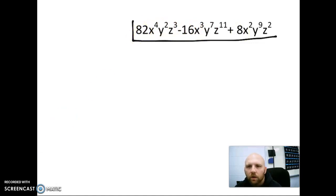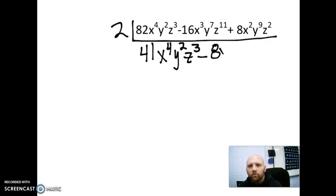So we can divide those by 2. We're going to divide those by 2. 82 divided by 2 is 41. All the variables and exponents stay the same because we didn't change those yet. We could have done this all in one step if we wanted to, but we're going to break this down into multiple steps.